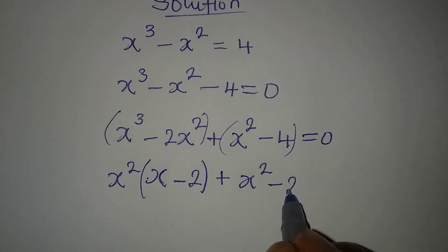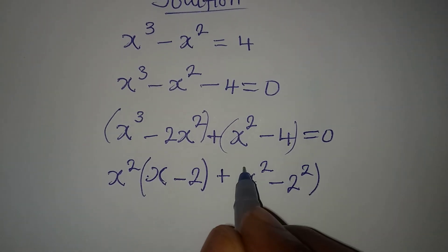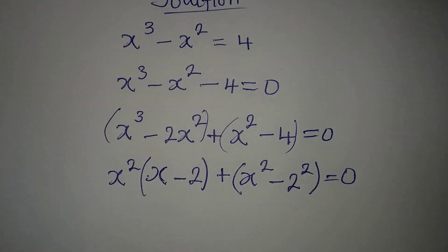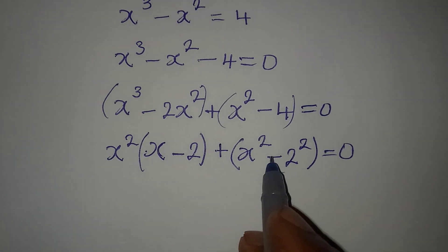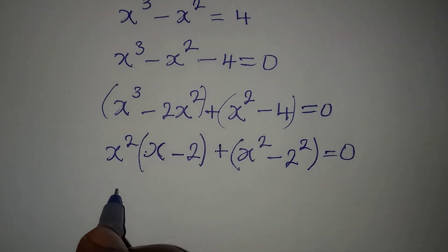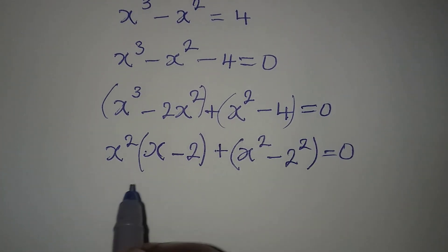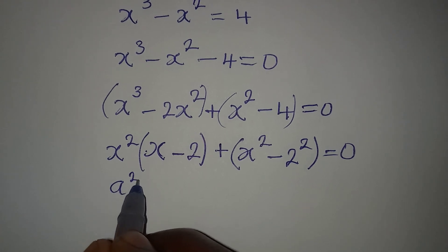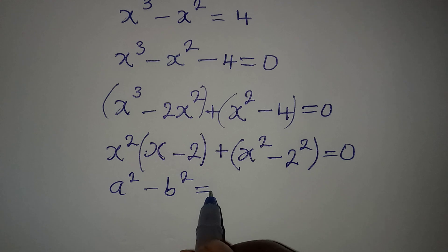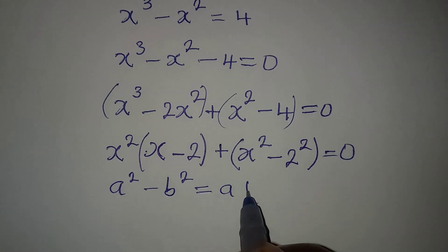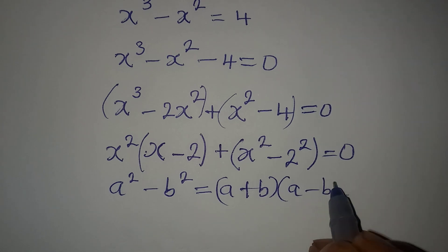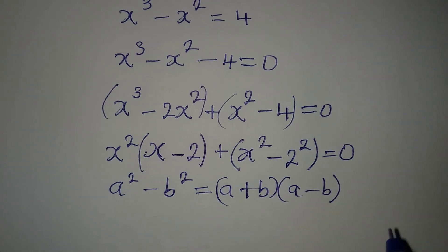Then plus here, this is the same thing as x squared minus 2 squared, because 4 is 2 squared. This is equal to 0. From here I can apply difference of two squares. In the difference of two squares, if you have a squared minus b squared, this will be the same as (a + b)(a − b).